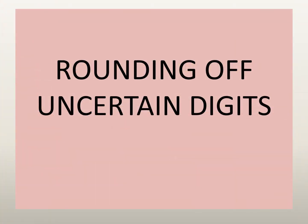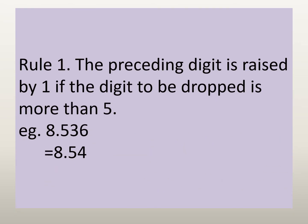Now let's see rounding of certain digits. Rule 1: the preceding digit is raised by 1 if the digit to be dropped is more than 5. Let's see the example 8.536. Here, the third digit is 6, so as it is more than 5, the preceding digit, which is 3, has to be raised by 1. So the number when rounded, 8.53 becomes 8.54, since 3 plus 1 is 4.